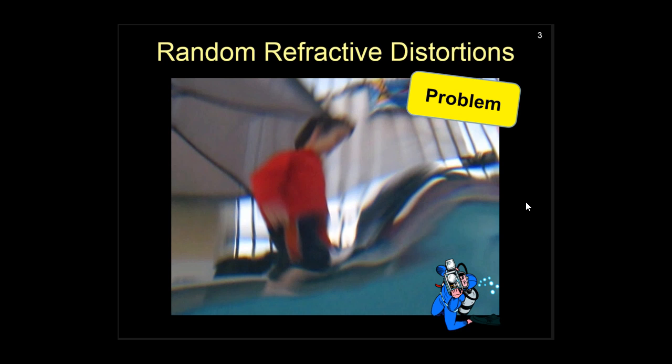Images taken upwards from below the water suffer from severe distortions, as in this example. You may be familiar with it from the swimming pool or the sea. What causes these distortions?